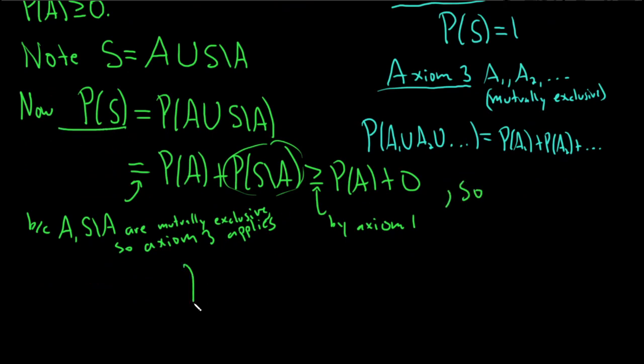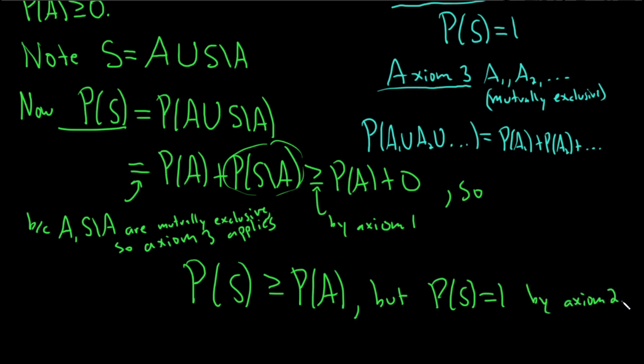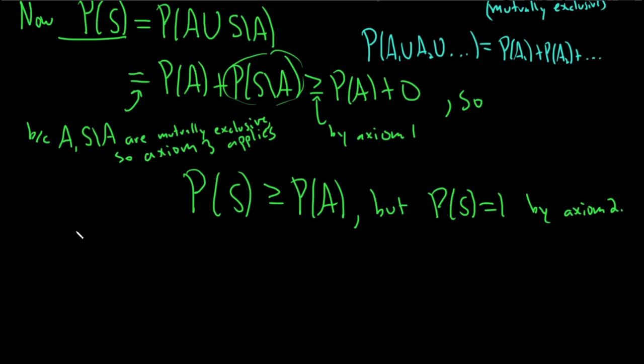So we have P of S, the probability of the sample space, is greater than or equal to the probability of an event A. But we know something about the probability of the sample space, right? The probability of the sample space is 1 by axiom 2. So that tells us, so thus, we have 1 greater than or equal to the probability of A. So the probability of A is less than or equal to 1.